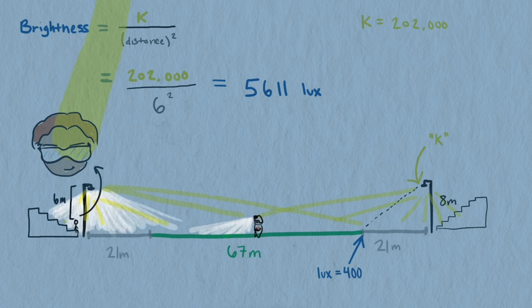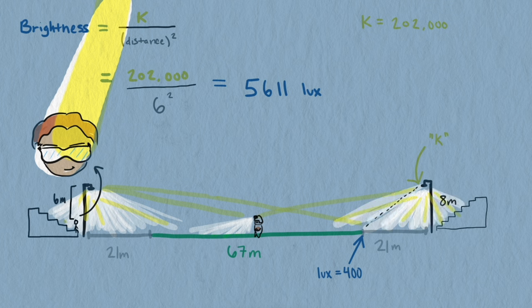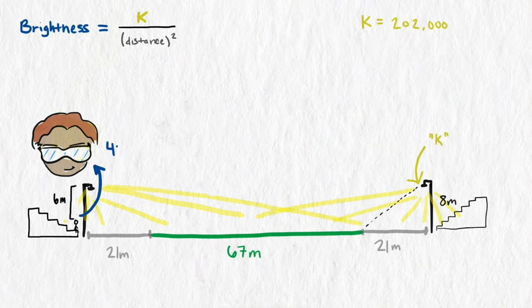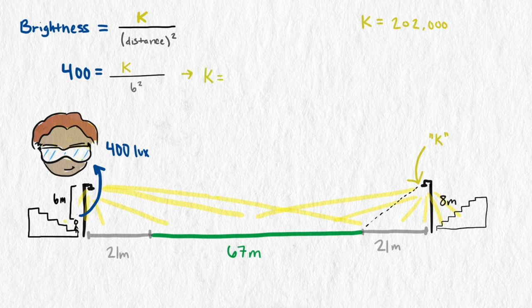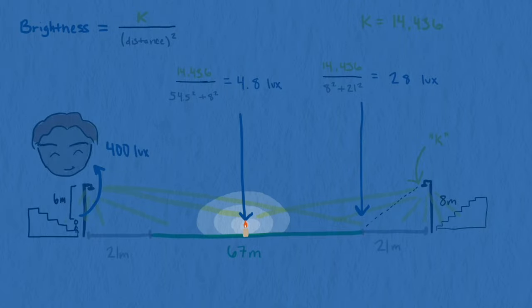If we want the players in the field to see better, the sidelines will be uncomfortably bright, and eclipse glasses will have to be issued to the fans as they come into the stadium. If we tone down the light so it's good for the fans, then the coaches could barely see, and the players don't have enough light to see which color of jersey everyone's wearing. At this brightness, the players in the middle get 5 lux from each light, which is about the brightness one foot away from a candle.